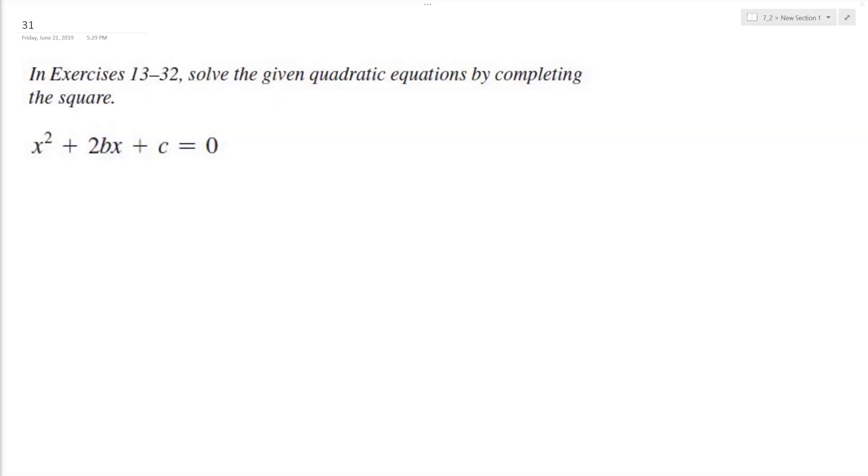Let's solve the following problem by completing the square. First thing I'm going to do is move the constant c over. Then we have x squared plus 2bx equals negative c.